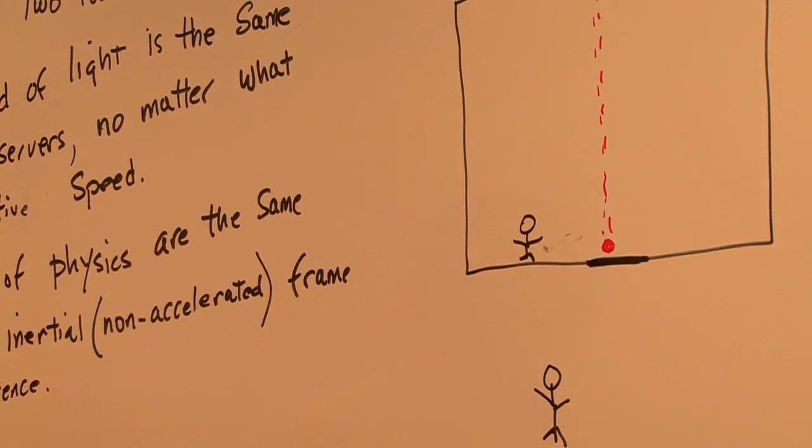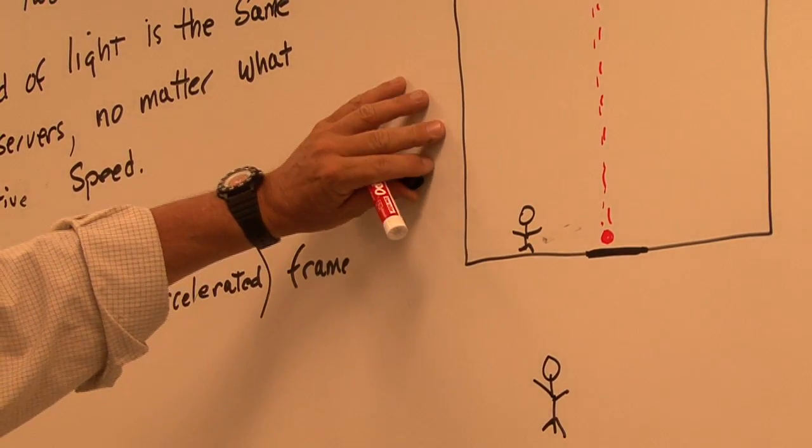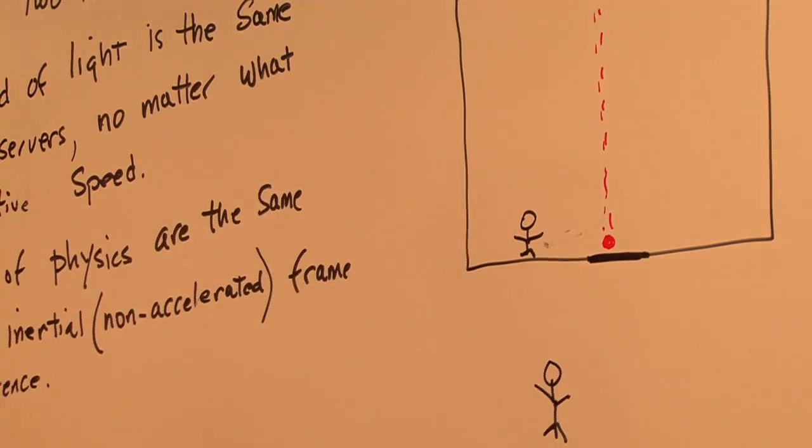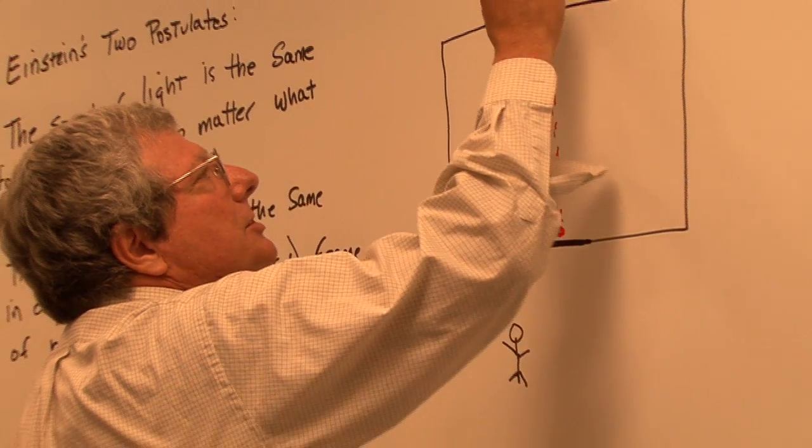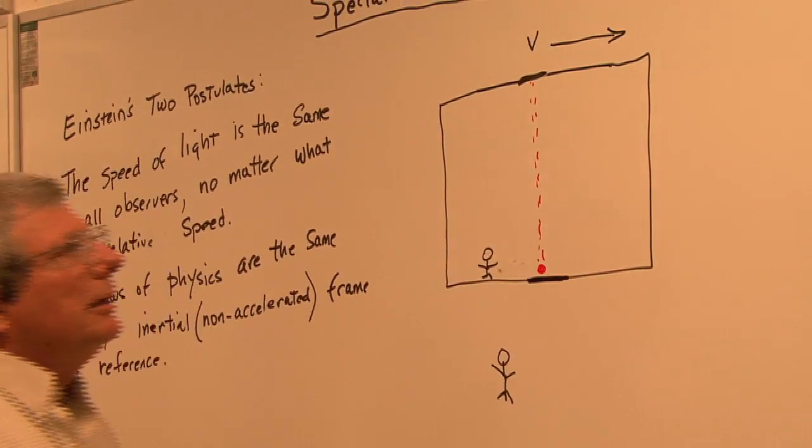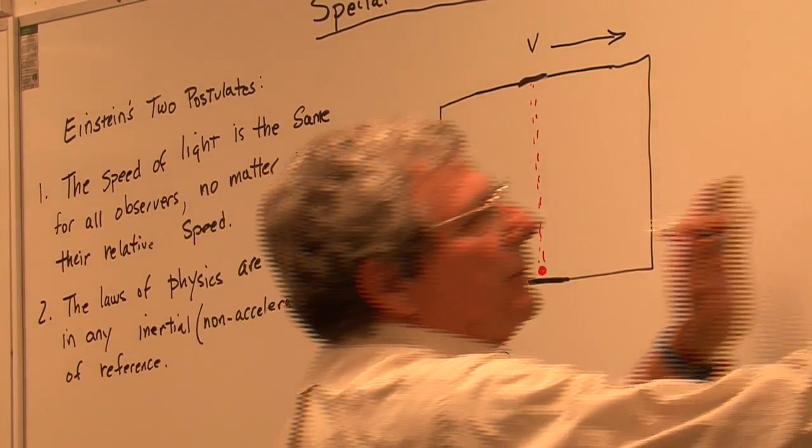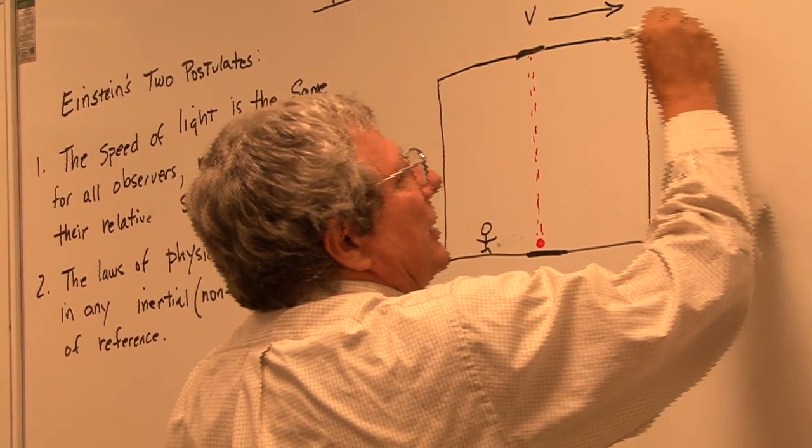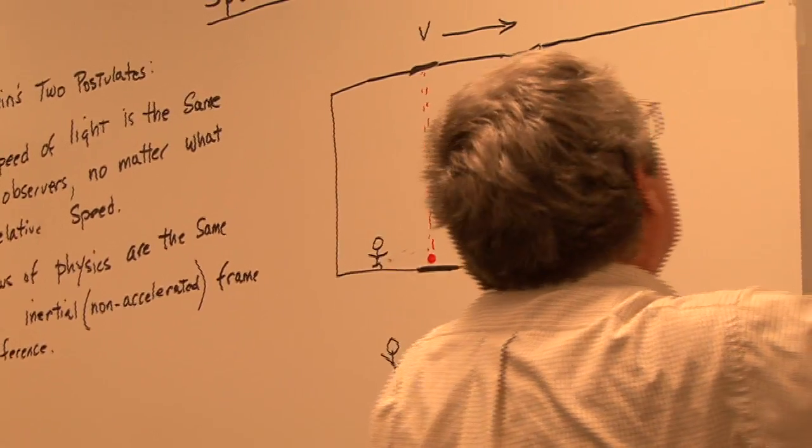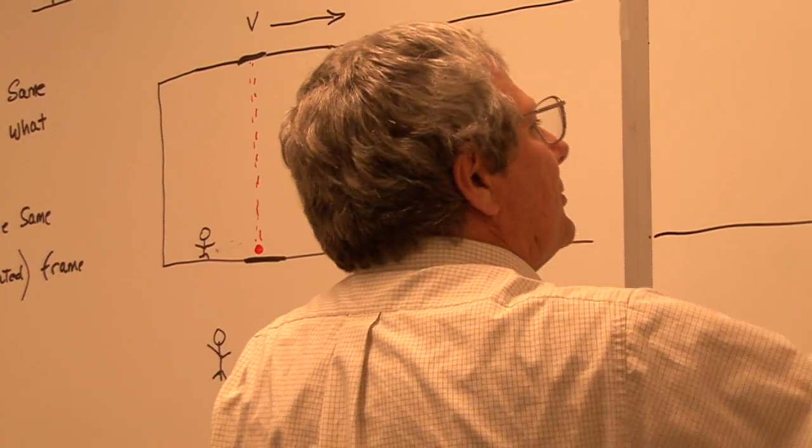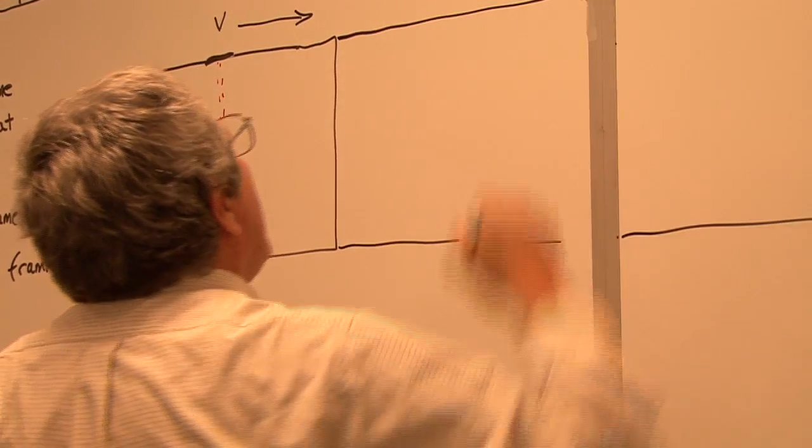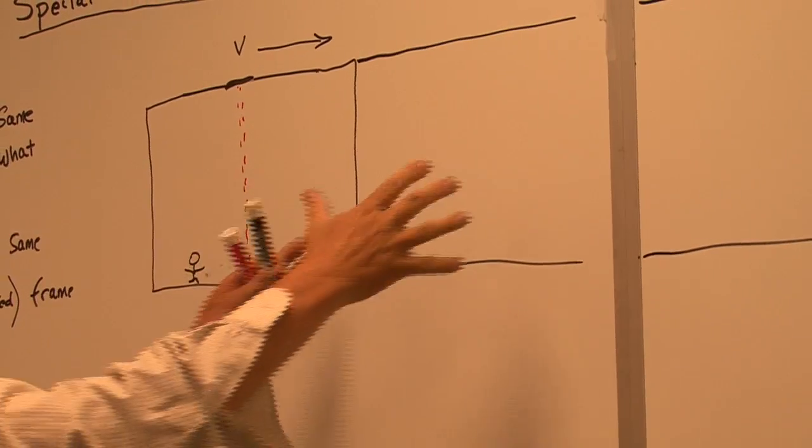What we're going to do is accelerate this spaceship to a certain velocity. We'll call this velocity V. And just to keep it moving, I'm going to extend this spaceship out this way because it's moving along a certain direction.